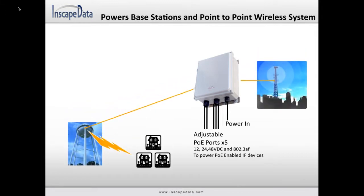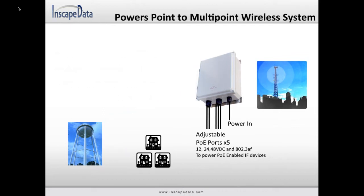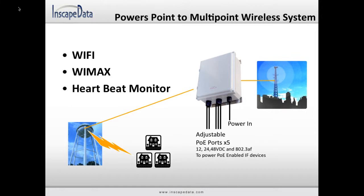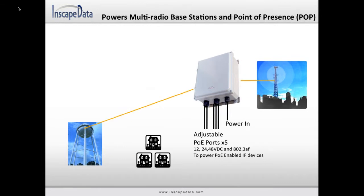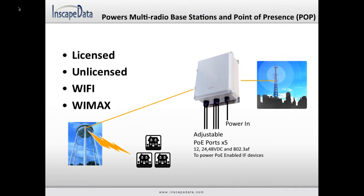The Link Power LPS 1000 simplifies and powers service providers' base stations and access points. The integrated PoE port transient surge protection, dual power input, multiple port voltages, and remote PoE restart ensures your licensed and unlicensed wireless services are at maximum uptime. The LPS 1000 increases reliability of standards-based Wi-Fi and WiMAX radios, enabling service providers to mix and match licensed, unlicensed, Wi-Fi, and WiMAX radios all at a single site.